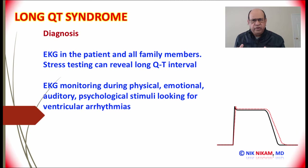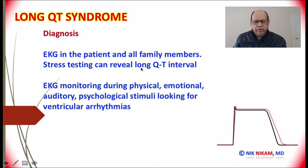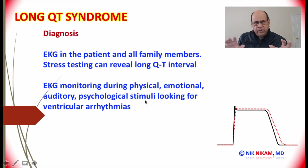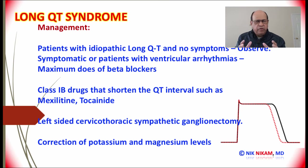How do we diagnose long QT syndrome? Of course, we are going to use an electrocardiogram to diagnose the QTc interval and thus make a diagnosis of long QT syndrome. If there is evidence of long QT syndrome in a given patient, all other family members must have an electrocardiogram to see if they have asymptomatic long QT intervals. The QT interval prolongation can also be brought out by stress or any type of physical, emotional, auditory, and psychological stimuli, which can not only prolong the QT interval but may also precipitate ventricular arrhythmias, ventricular tachycardia, or even fibrillation.